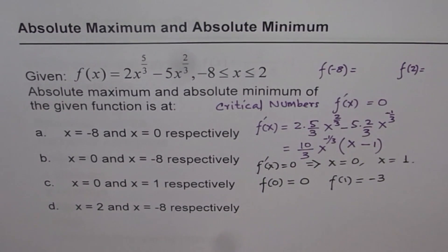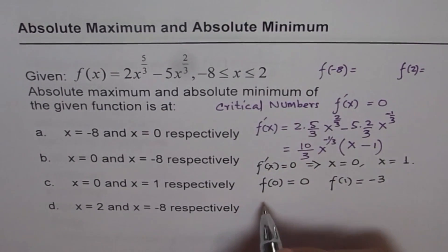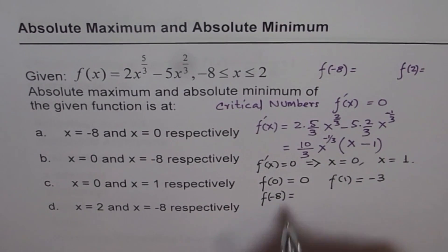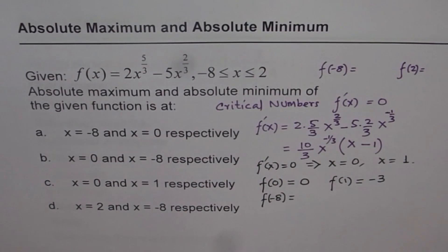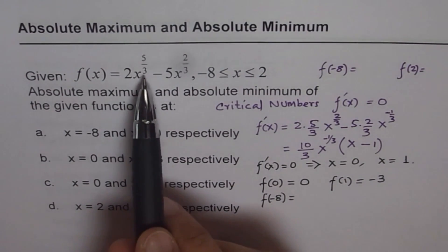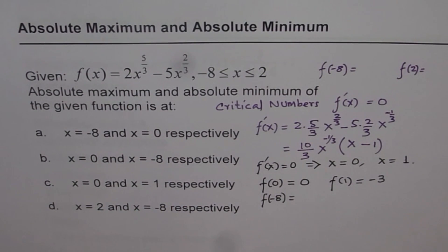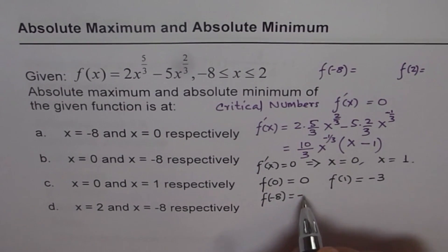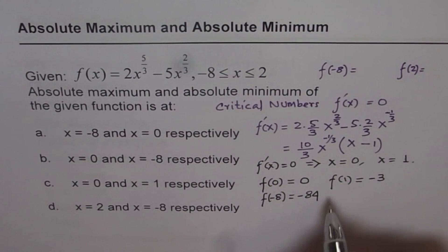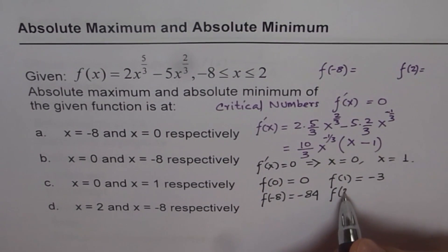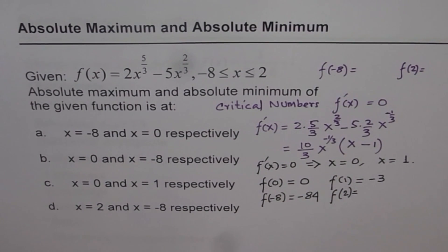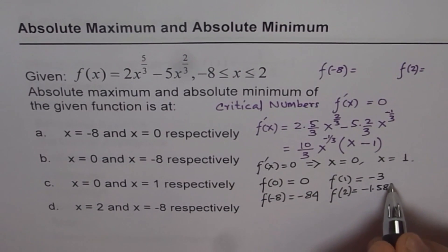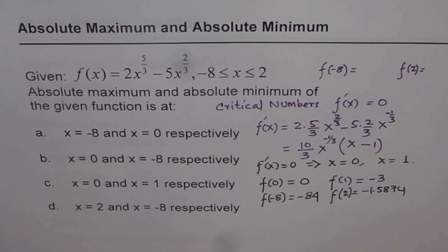For f(minus 8): the cube root of minus 8 is minus 2, and minus 2 to the power of 5 minus 5 times minus 2 squared gives f(minus 8) = minus 84. You can use a calculator to verify this. Similarly, f(2) equals approximately minus 1.5874.